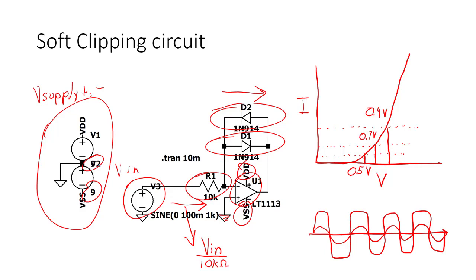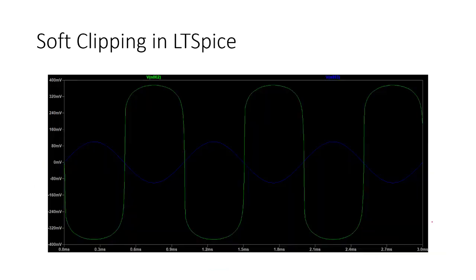Let's look at a simulated output from LTSpice of this circuit. The blue is the input and the green is the output. The type of output you get is dependent on the circuit characteristics, so if I change that 10k resistor to a different resistance, I'll get a different output curve.